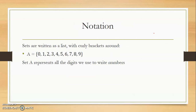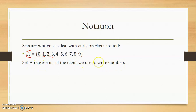So how do we write sets? There's a notation you need when writing sets. We write them with curly brackets on the left and right. We always include a capital letter when we want to define sets. So this is set A — set A has members including zero, one, two, three, all the way to nine. These are members or elements of this set. Set A represents all the digits we use to write numbers. Also notice the comma in between each member — that differentiates between one number and the next.